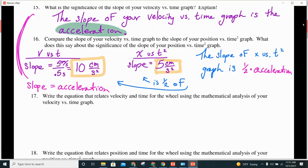Number 17, we're going to write an equation that relates velocity and time for the wheel using a mathematical analysis of our velocity versus time graph. Again, I had you guys do it one way. We're going to take it one step farther. We're going to take your equation, and we're going to write a general equation.